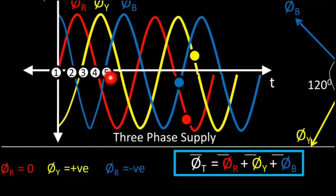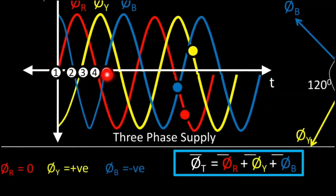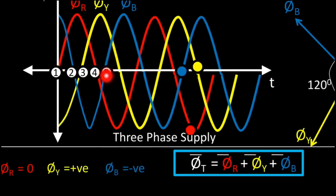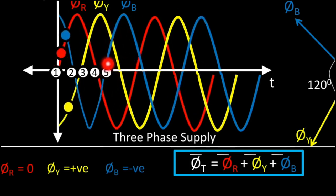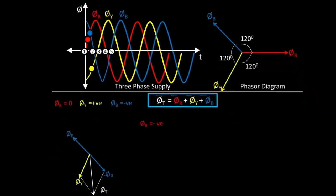At instant 5, again checking the values for different fluxes: φB is 0 — it intersects with the x-axis. φY is positive (upward), and φR is downward so it is negative. So at instant 5: φR = negative, φY = positive, and φB = 0.